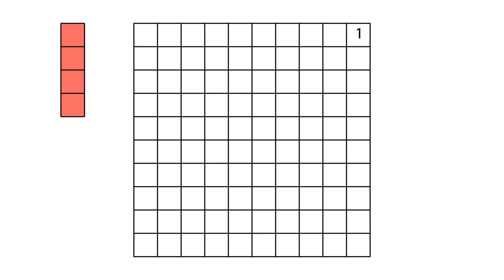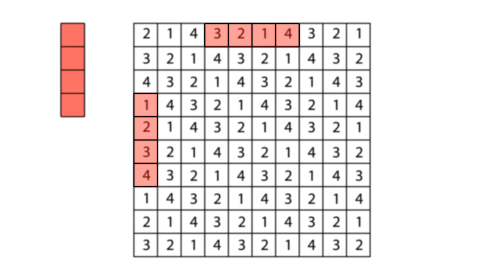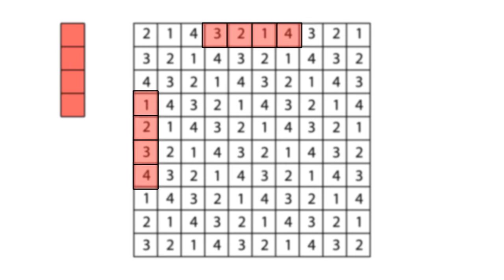If we were to write down the number 1 on the top corner, and then 2s down the first diagonal, then 3s, 4s, 1s again, 2s, and so on, we can find something interesting. No matter where you put the tile, assuming only vertical and horizontal orientations, it will cover the numbers 1, 2, 3, and 4 every time.